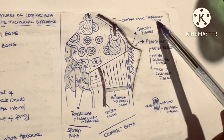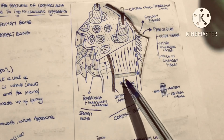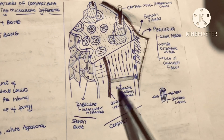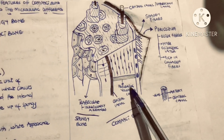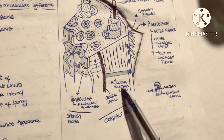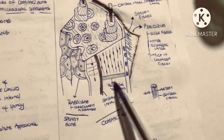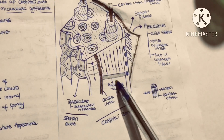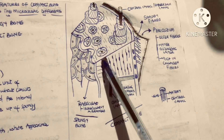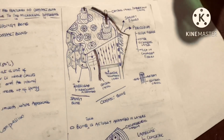We have the central canal also called the Haversian canal. Perpendicular to this central canal is the perforating Volkmann's canal. It also contains blood vessels and is perpendicular to the central canal.